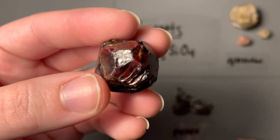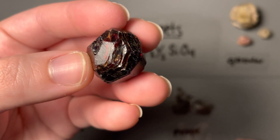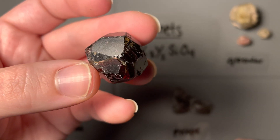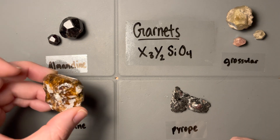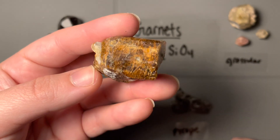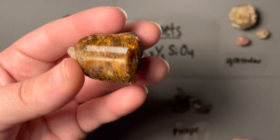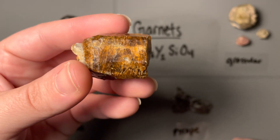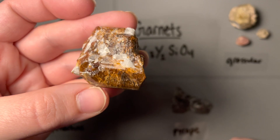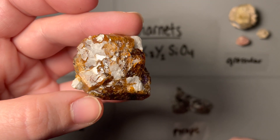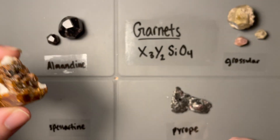Common to all garnets, we have conchoidal fracture and no cleavage. For almandine I like to think of that dark red color. Spessartine can be several different colors, but what's really common is this orangey undertone — this is a weird-looking garnet, not a normal shape, but the orange color is really indicative of this variety.